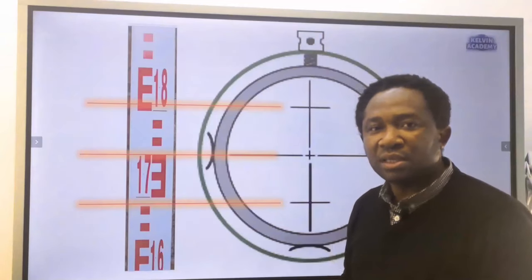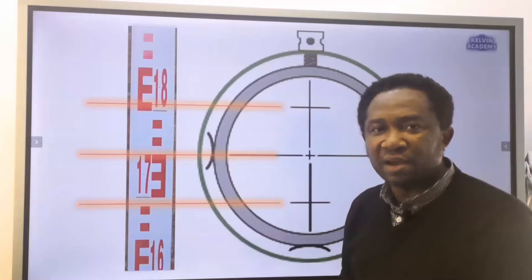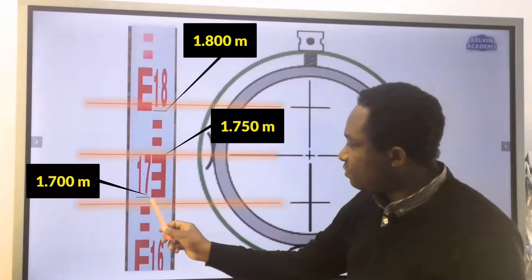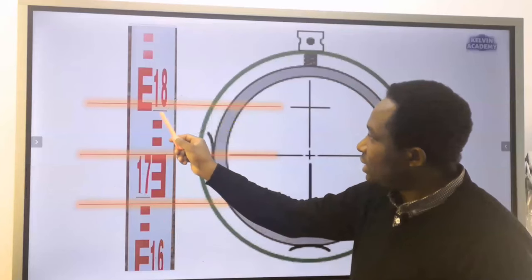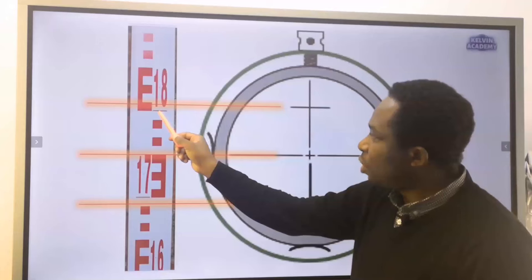Here we are using the E level staff. 1.7 starts at the bottom of this E and 1.8 starts at the bottom of the next E.